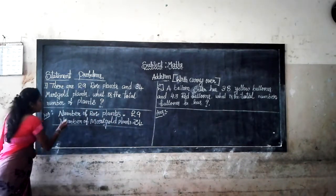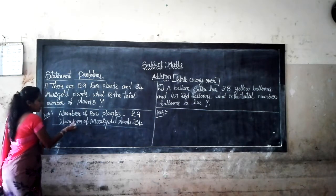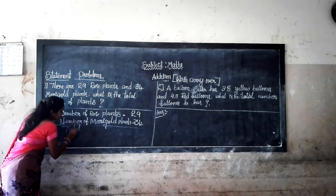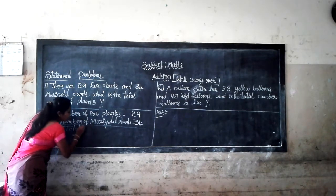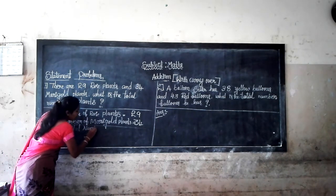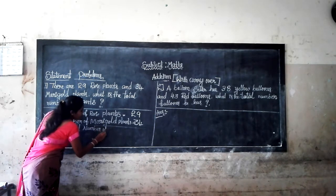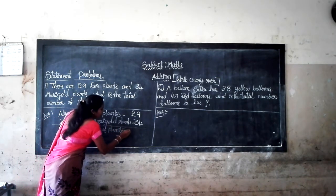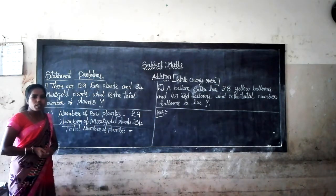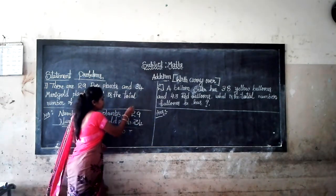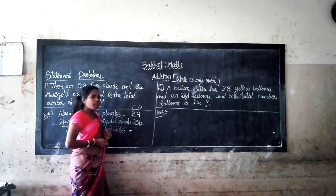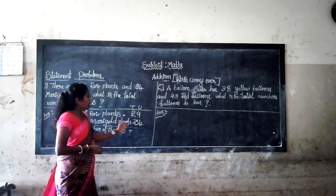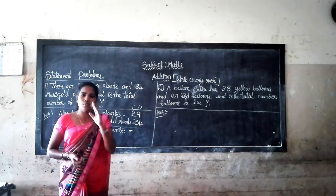Let's find the sum. Number of rose plants: 29. Number of marigold plants: 34. Total number of plants. Here in 29, there are 2 tens and 9 units. In 34, there are 3 tens and 4 units.